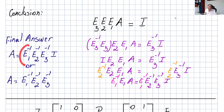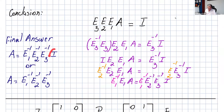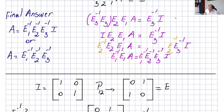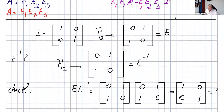Therefore A = E1⁻¹ · E2⁻¹ · E3⁻¹ · I, and since multiplying by I changes nothing, A = E1⁻¹ · E2⁻¹ · E3⁻¹. Since inverses of elementary matrices are themselves elementary matrices, you'll also see this written as A equals a product of elementary matrices E1 · E2 · E3.